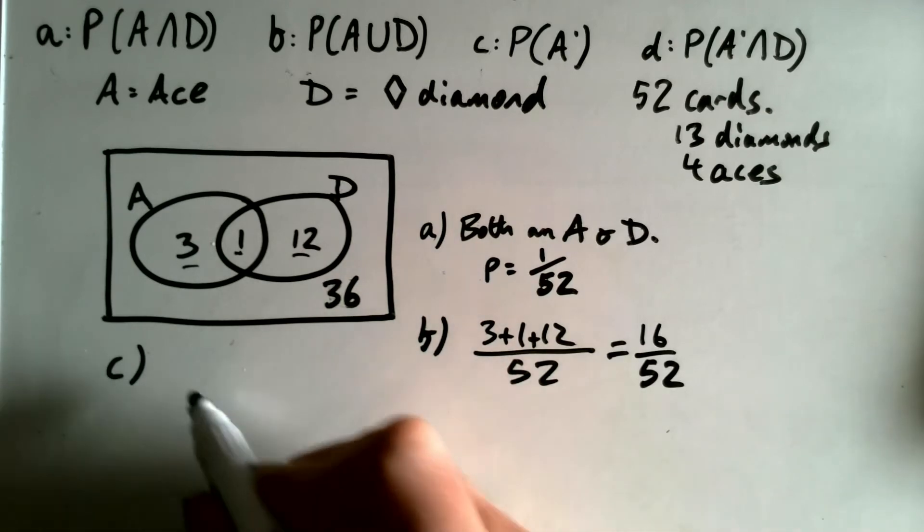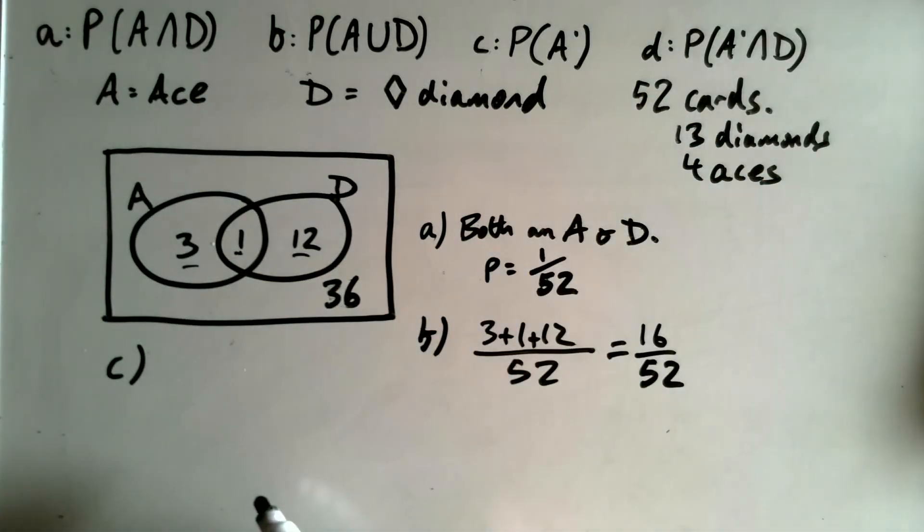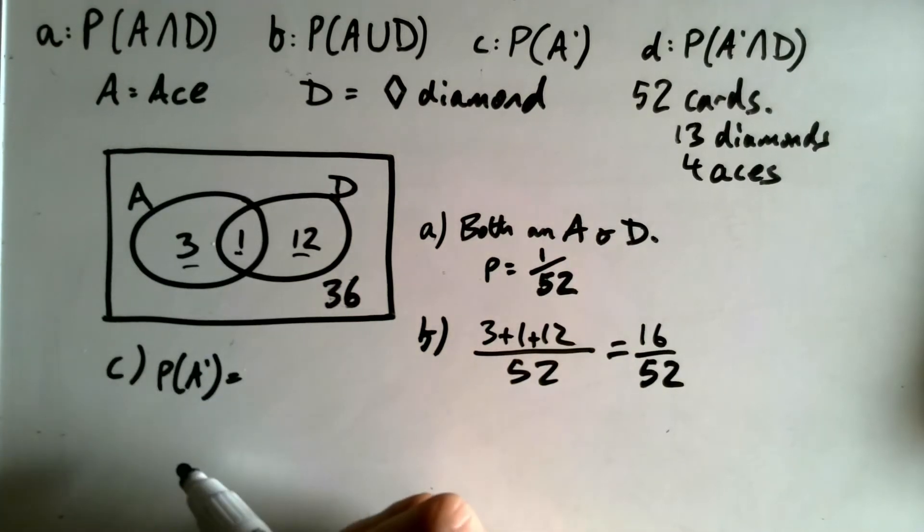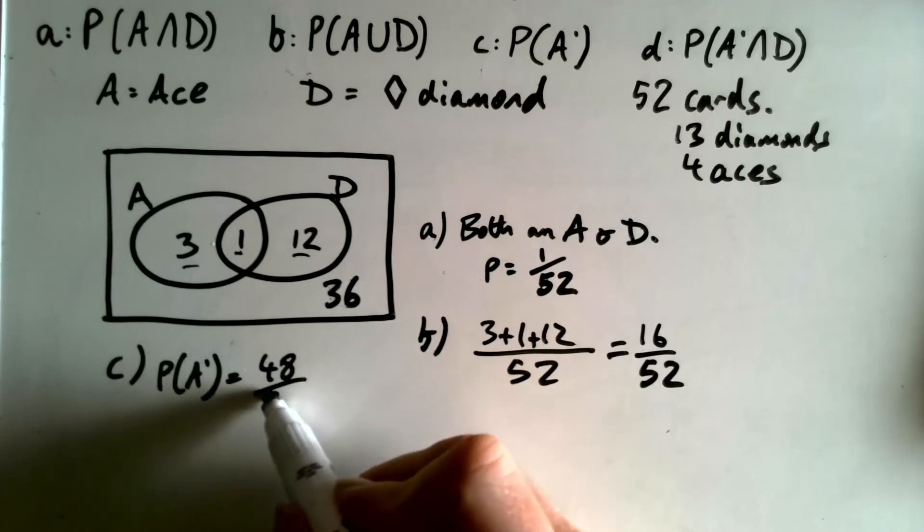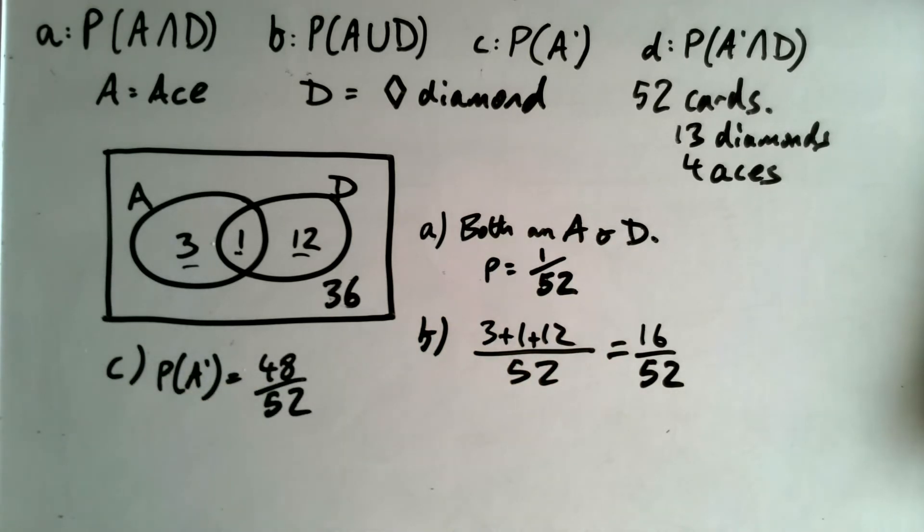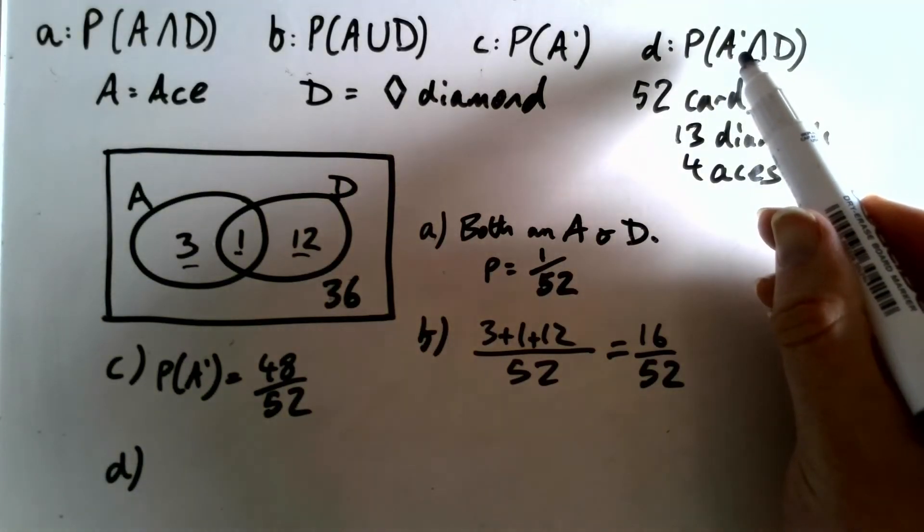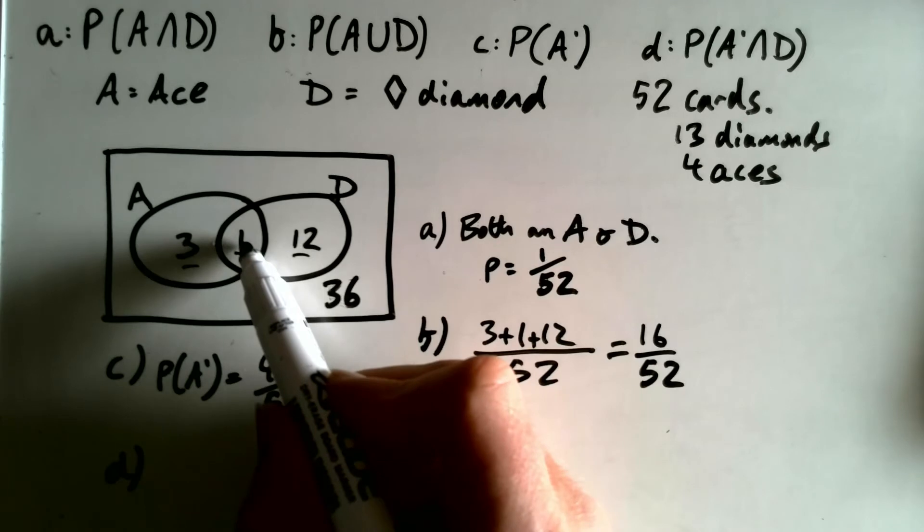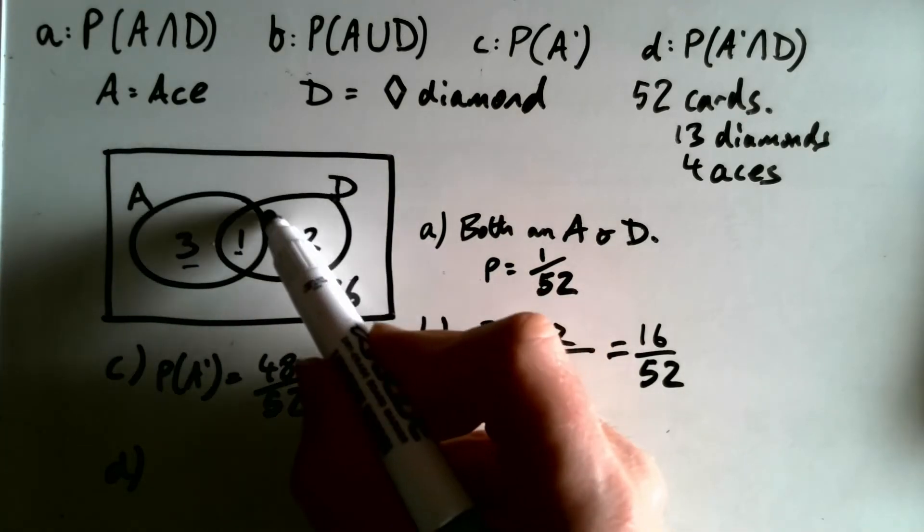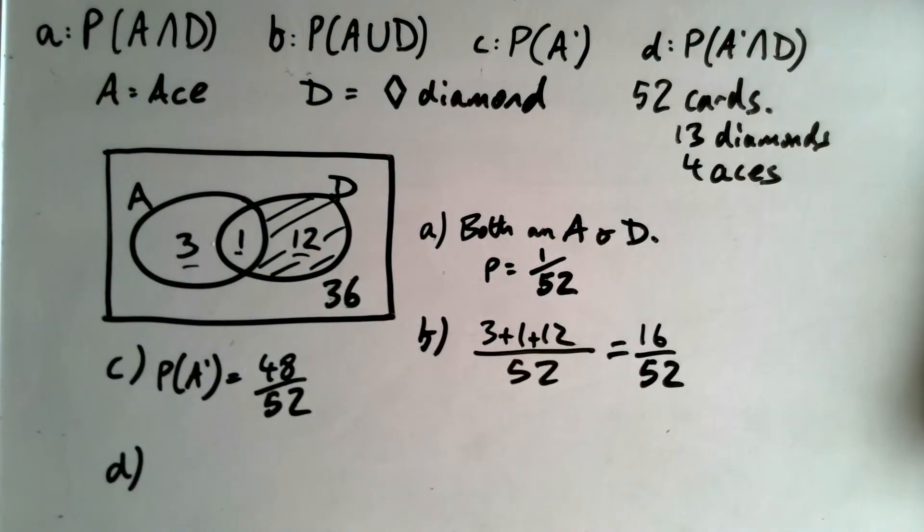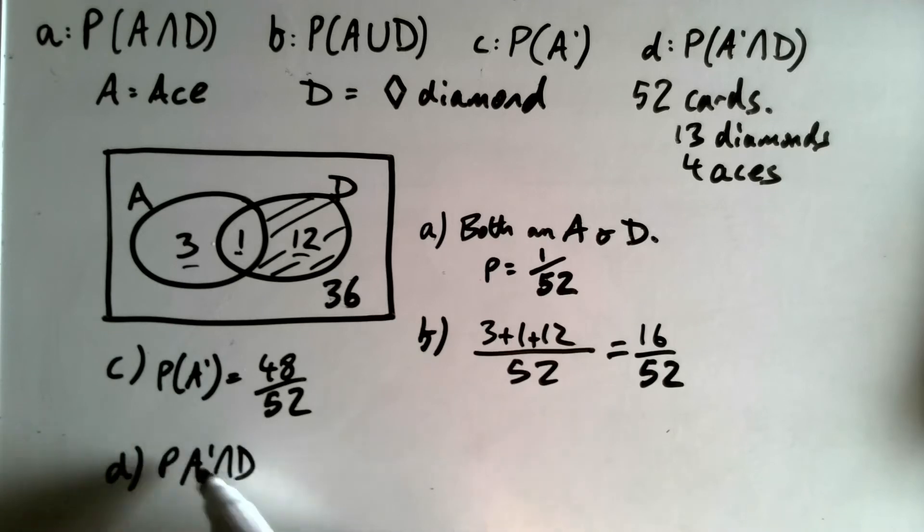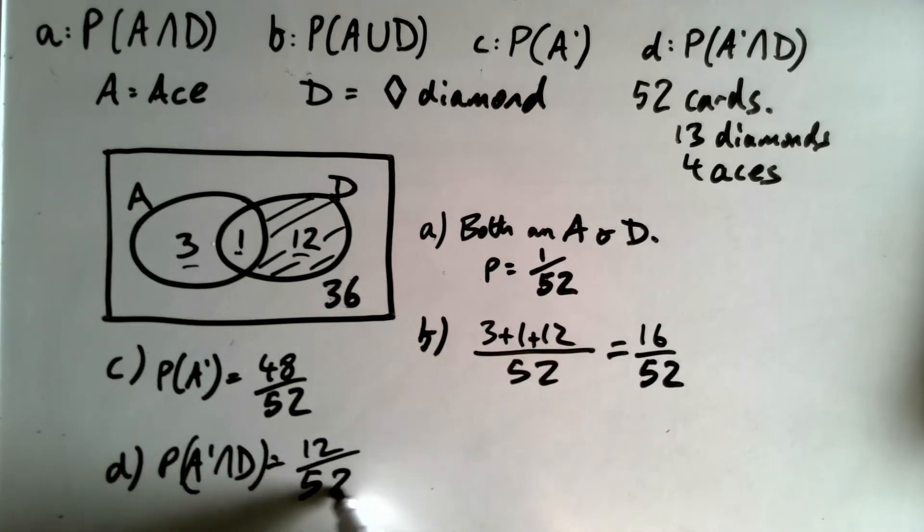Part C. Probability ace dash. That means not an ace. So probability not an ace. Well you've got four aces, meaning you've got 48 left over that aren't aces. So that would be 48 out of 52. And the last one, probability not an ace intersection with a diamond. So it's not an ace, but it is a diamond. So that is going to be those ones there, isn't it? So that is going to be 12 out of 52.